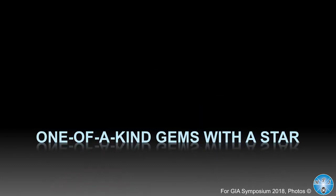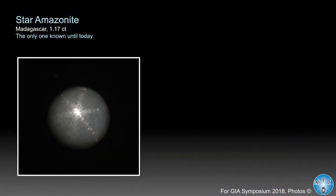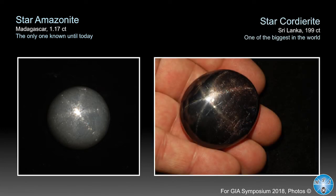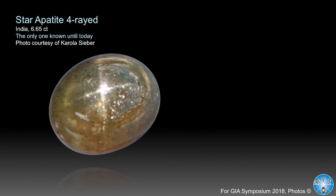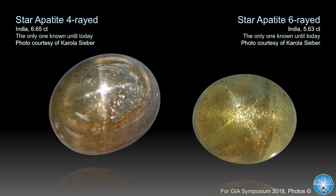Now we move to the last part — the one-of-a-kind gems with a star. These don't have to be beautiful, but they are very rare. Star amazonite — I doubt many have heard of it. We had it cut and it shows a pretty nice six-rayed star. Swan stone, cordierite, iolite — water sapphire, the gem of four names — shows a big star at 199 carats. Star apatite: as I said before, these are not really beautiful, but they are very rare. To my knowledge these are the only ones known today, and you have it with four rays and also with six rays.